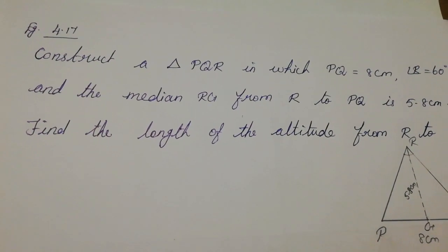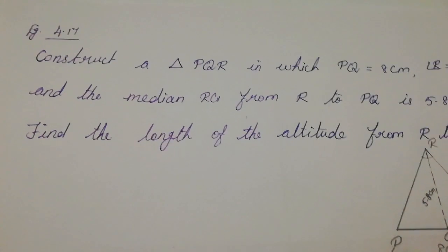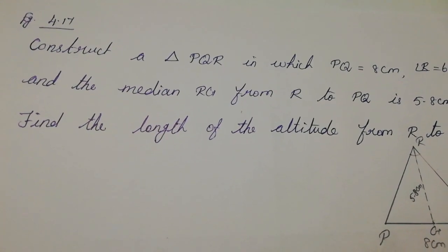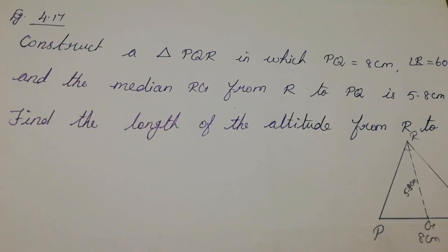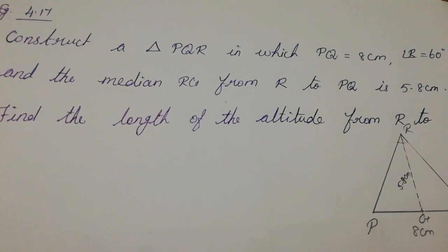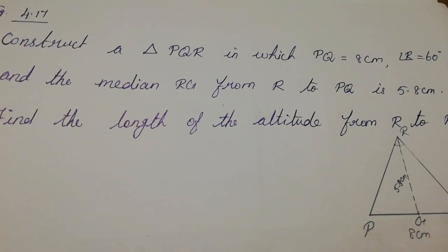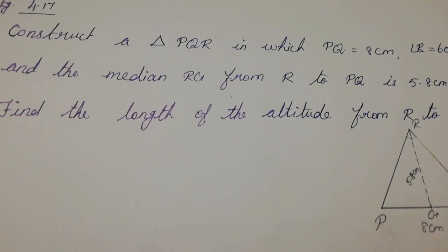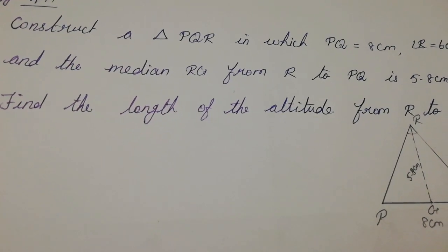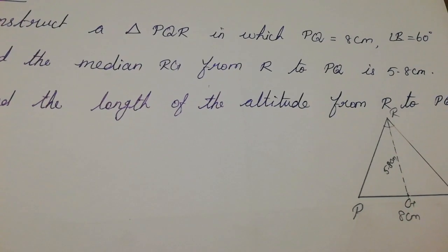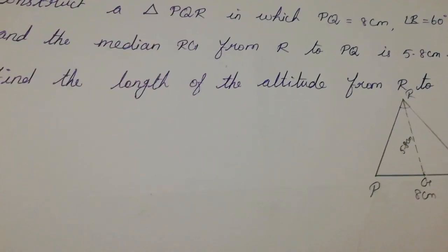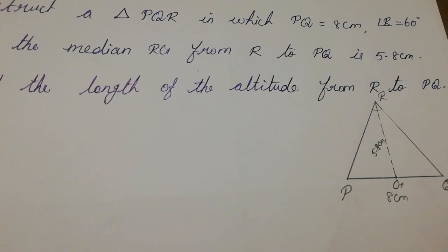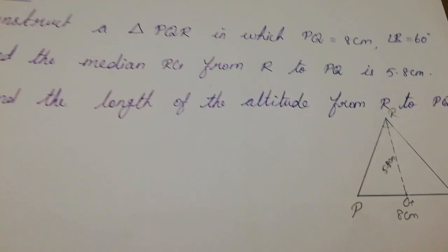Hello everyone, welcome to SJR Symbolmax, the practical geometrism example 4.17. Construct a triangle PQR in which PQ is equal to 8 centimeter, angle R is equal to 60 degrees, and the median RG from R to PQ is 5.8 centimeter. Find the length of the altitude from R to PQ.